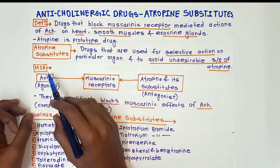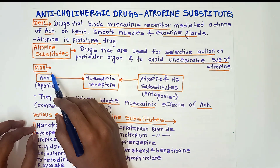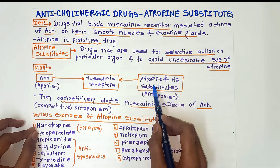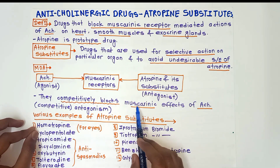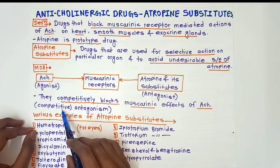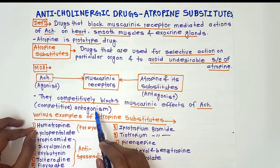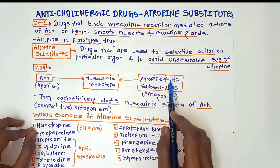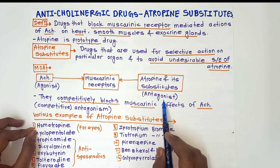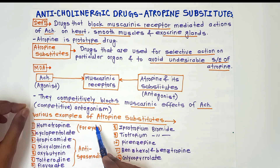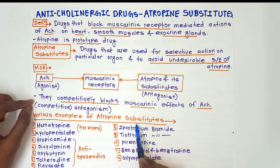The mechanism of action of anticholinergic drugs or atropin substitutes: atropin and atropin substitutes competitively block the muscarinic effects of acetylcholine. This mechanism is called competitive antagonism. For muscarinic receptors, atropin and its substitutes act as antagonists and acetylcholine acts as an agonist.